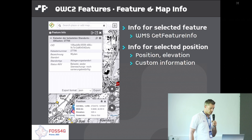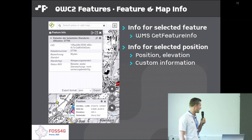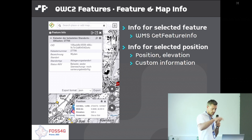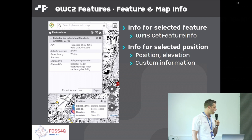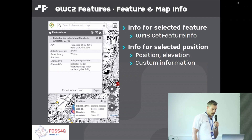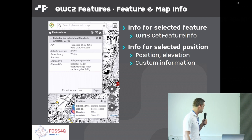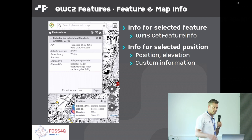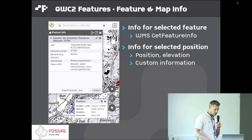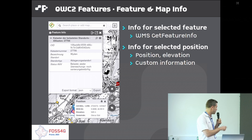Feature info and map info: feature info is basically WMS GetFeatureInfo, which displays the feature picked at a position in a table. You can also create customized templates to display them in a more sophisticated way. The map info is accessed by right-clicking on the map, giving a small pop-up with position, elevation, and additional information which you can configure — in this case, the sector and commune will be displayed.